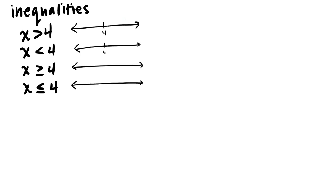I'm just going to put four in the middle to keep things easy. On that number line we have two ways to deal with the bound of our inequality. For x greater than or equal to four, we can either put an open circle at four and shade to the right, or we could put a parenthesis there. The circle is the old-school way; the new way is to use a parenthesis or bracket, just like with interval notation.